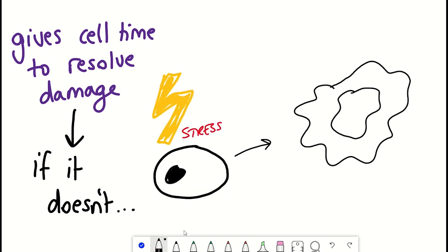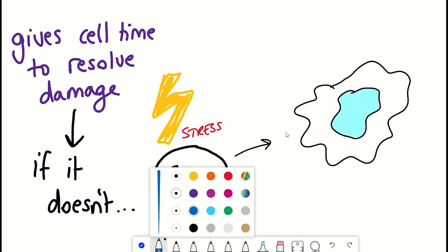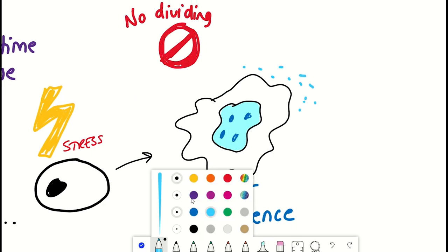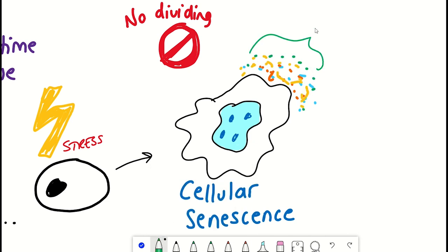Which was a nice segue to tell you about cellular senescence. When a cell enters senescence, it not only stops dividing, but it also develops a secretory phenotype, referred to as the senescence-associated secretory phenotype, or the SASP, as we like to say.